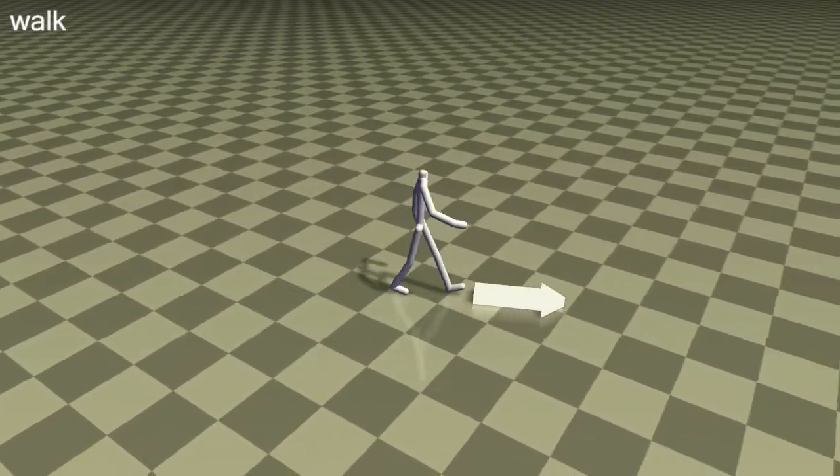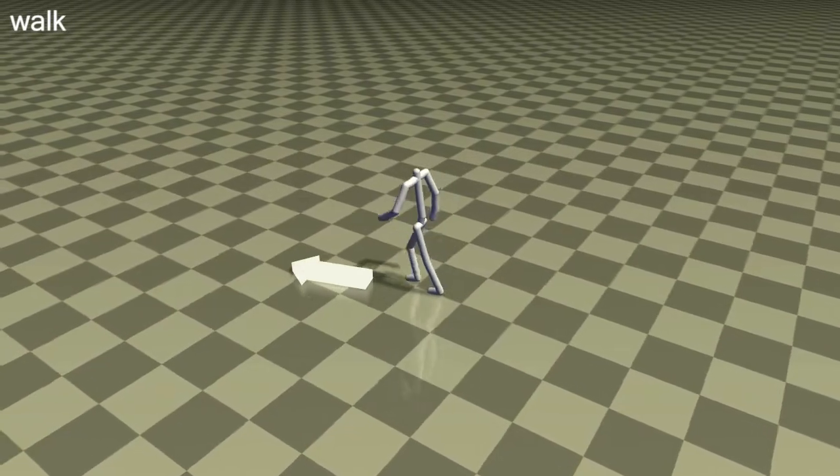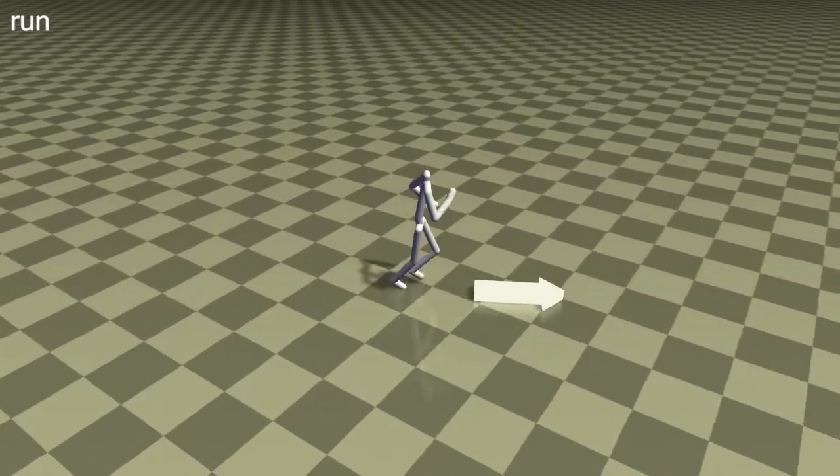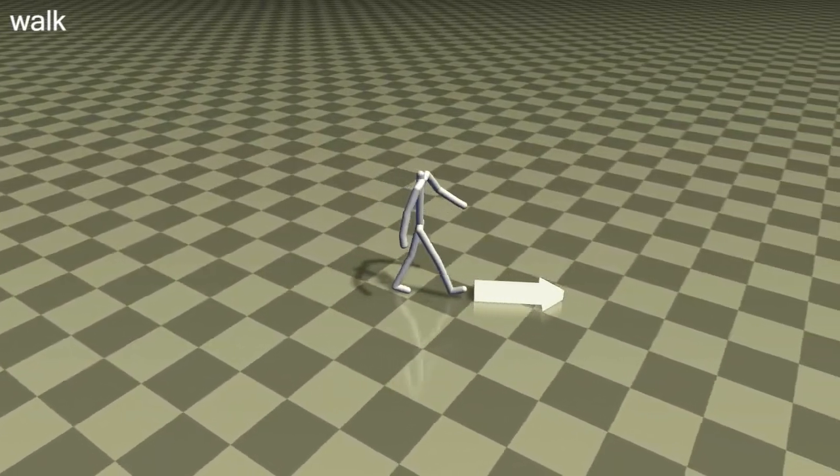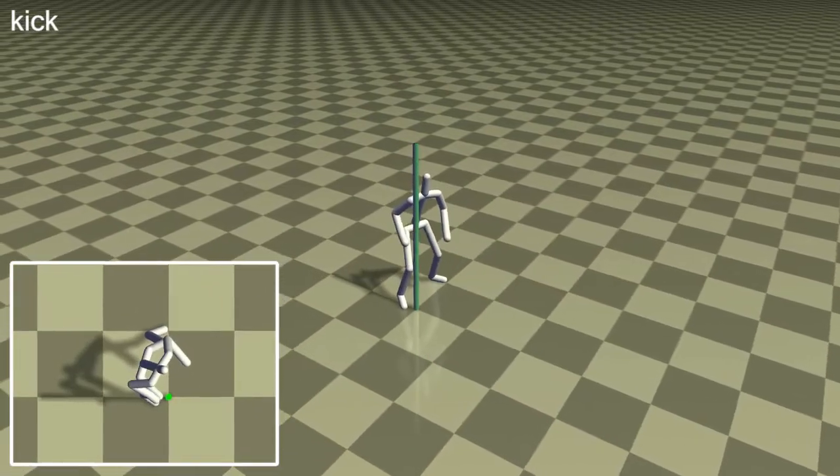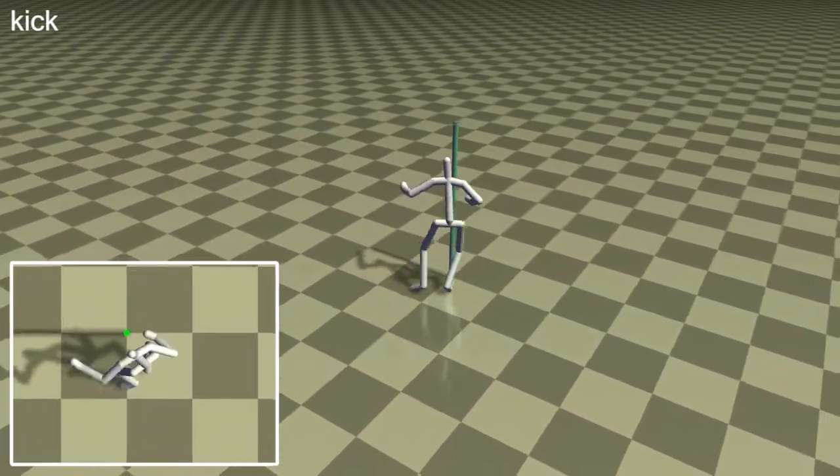The current task can be changed by switching controllers. In this way, we can switch between walking and running, or between punching and kicking. Note that the switched controllers are trained on different motion data.